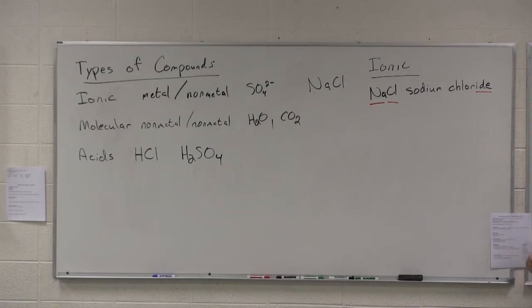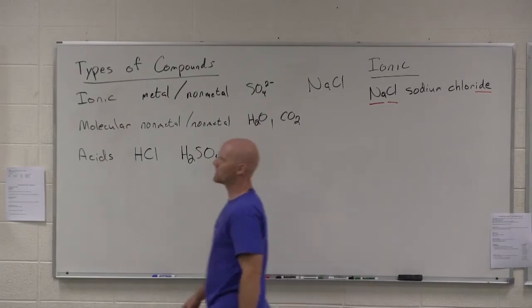Now it turns out that's rules number one and three, and we skipped rule number two here. Rule number two, if you look at it, says state the oxidation state of the metal with a Roman numeral in parentheses, and we skipped it for a reason.